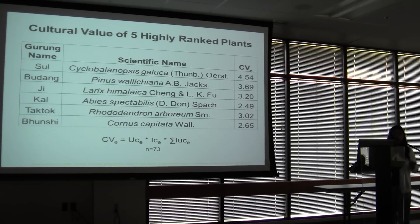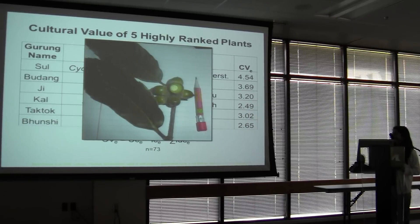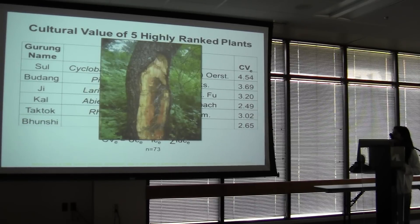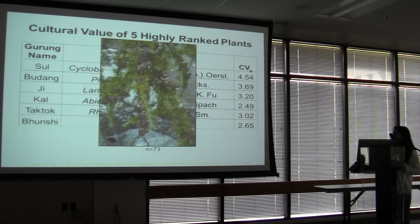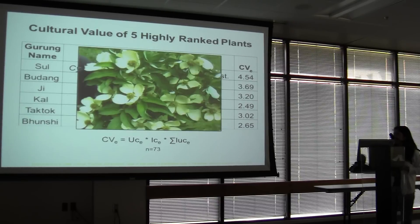The five highest ranked plants were ranked based on 73 participants. These are mostly used for fuelwood, and two of them — Larix and Abies — are also used for construction, being the most prized species for that purpose. The species include Castanopsis glauca, Pinus wallichiana — used for resin and fire — Larix himalaica, Abies spectabilis, and Quercus capitata, mostly used for fuelwood.